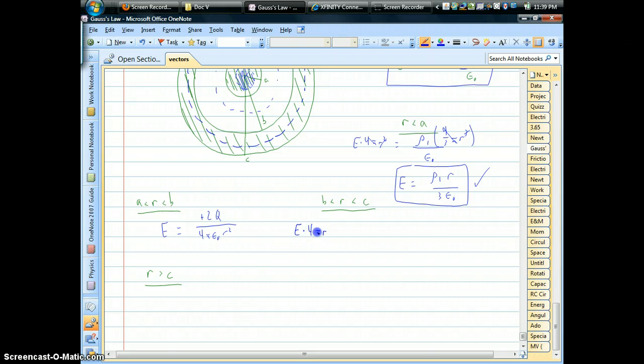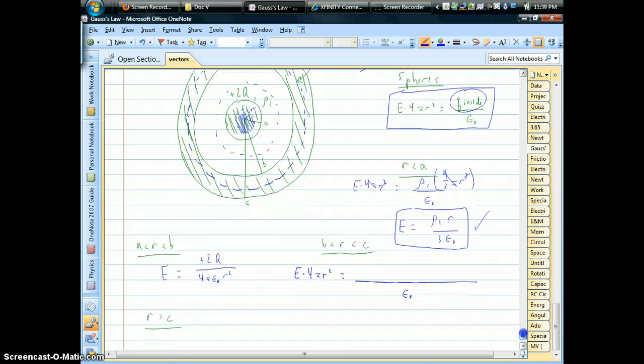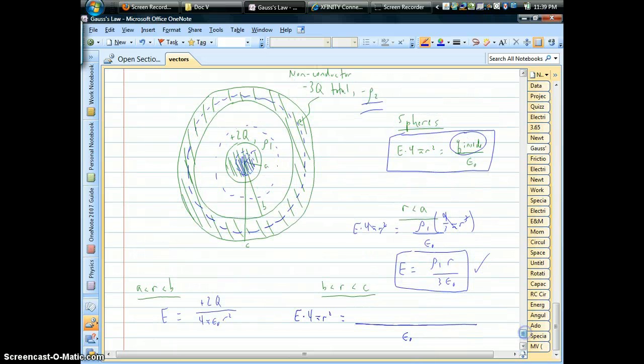Left-hand side, always the same. Right-hand side, we always have epsilon. So now we have to figure out what to plug in our numerator here. What's the charge?